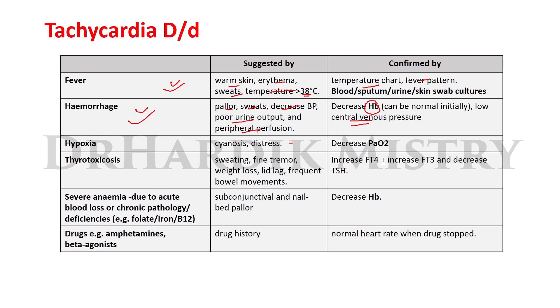When tachycardia occurs with signs of distress and we also find a decrease in the partial pressure of oxygen, then we can say the reason for this tachycardia is hypoxia.